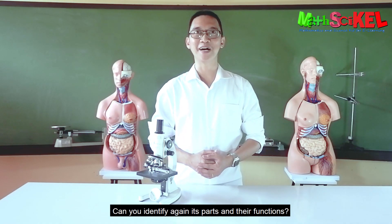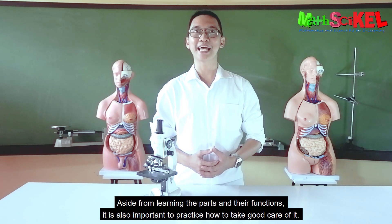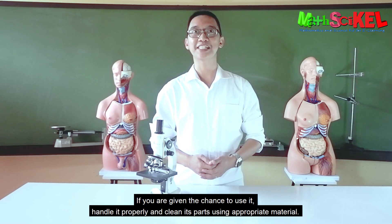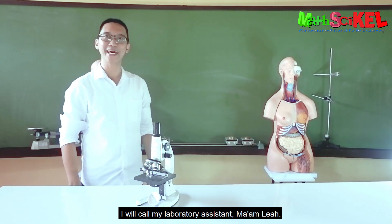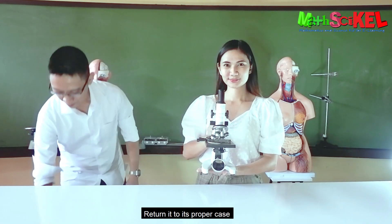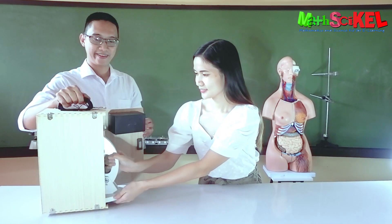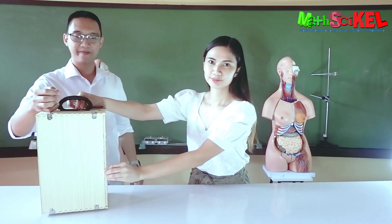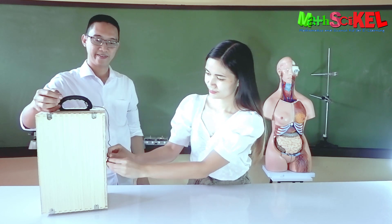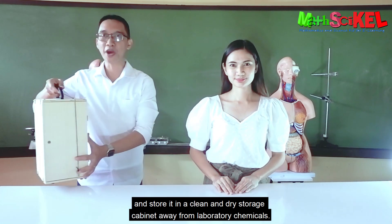Can you identify again its parts and their functions? Aside from learning the parts and their functions, it is also important to practice how to take care of it. If you are given the chance to use it, handle it properly and clean its parts using appropriate materials. To properly carry it, hold the arm with one hand while the other hand holds the base. Then return it to its proper case and store it in a clean and dry storage cabinet away from laboratory chemicals.